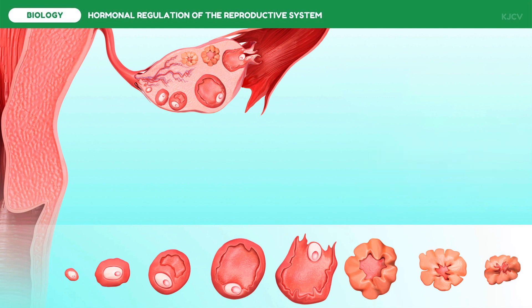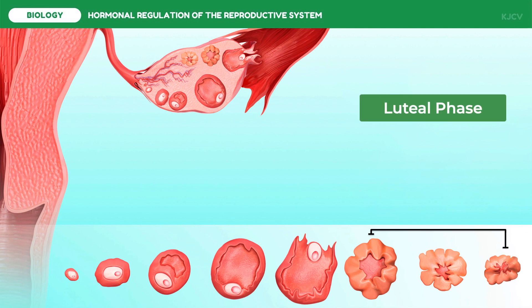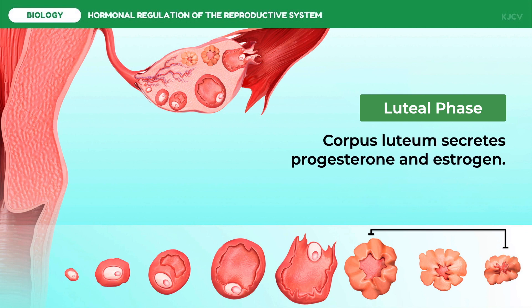The ruptured follicle left behind in the ovary after release of the ovum changes rapidly. The old follicular cells undergo a dramatic structural transformation to form the corpus luteum in a process called lutealization. The follicular-turned-luteal cells enlarge and are converted into very active steroid hormone-producing tissue. Abundant storage of cholesterol and lipid droplets gives the corpus luteum a yellowish appearance — hence its name: corpus means body, luteum means yellow. The corpus luteum becomes highly vascularized and secretes into the blood abundant quantities of progesterone along with smaller amounts of estrogen.